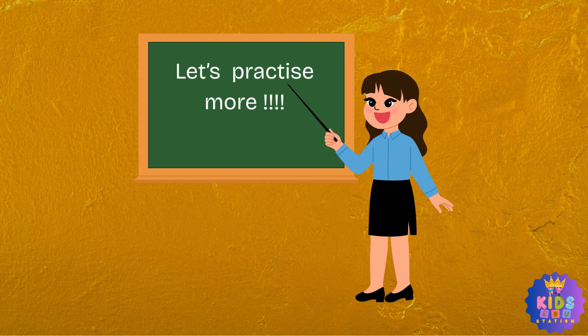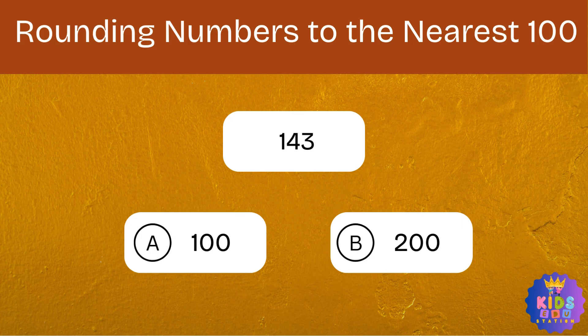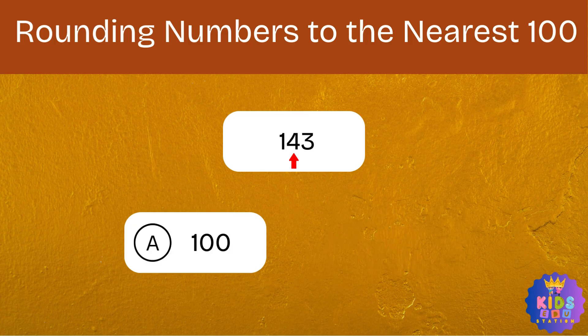Let's practice more. Let's take the number 143. To round to the nearest hundred, we look at the tens place. In 143, the tens digit is 4. If the tens digit is 5 or more, we round up. If it's 4 or less, we round down. Since the tens digit here is 4, we round down. So 143 rounded to the nearest hundred is 100.